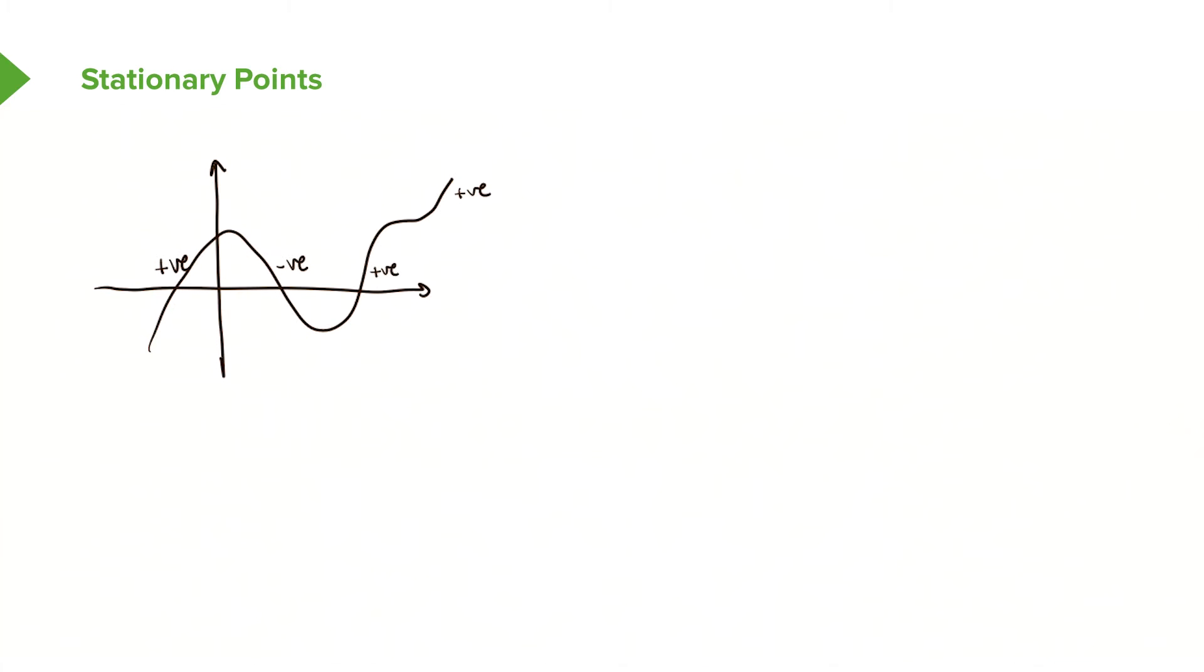The interesting points to us now are these little bits here. So what's happening here, there as the gradients change. So you can see at this point here that the gradient is going from positive to negative. So that's an interesting point for us. Here, you can see that the gradient goes from negative to positive. And then here, which makes it an interesting point, you have positive gradient, flat, and then positive again.